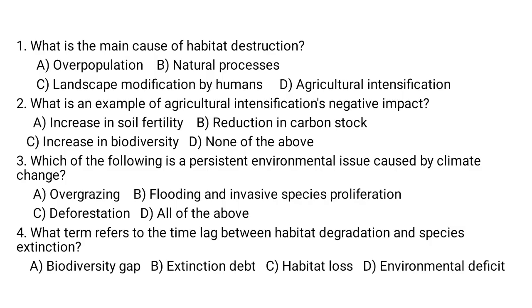Choose the correct answer from the given alternatives. Question number one: what is the main cause of habitat destruction? a) overpopulation, b) natural processes, c) landscape modification by humans, d) agricultural intensification. Question number two: which is an example of agricultural intensification negative impact? a) increase in soil fertility, b) reduction in carbon stock, c) increase in biodiversity, d) none of the above.